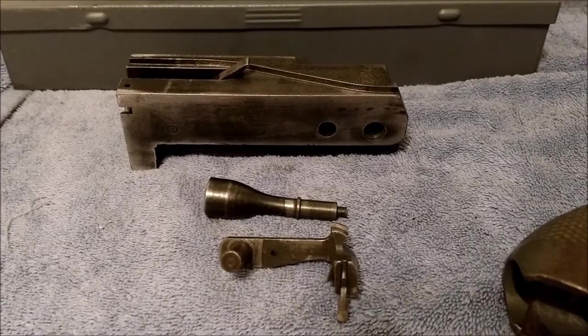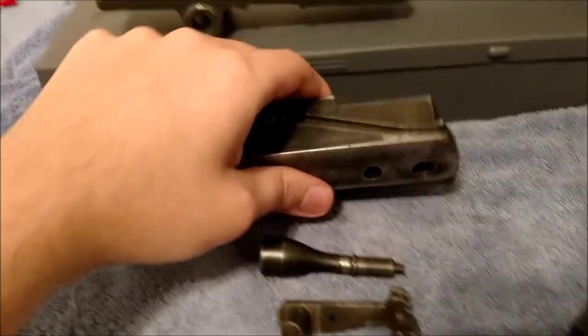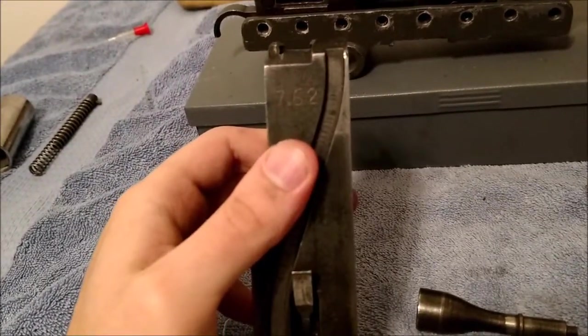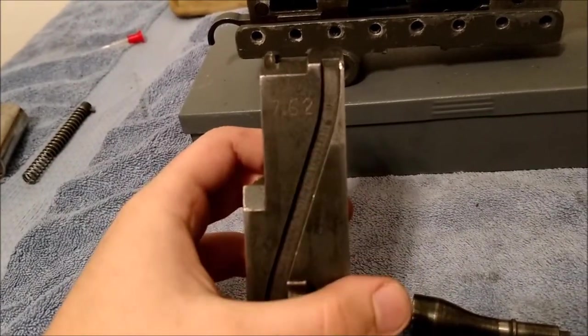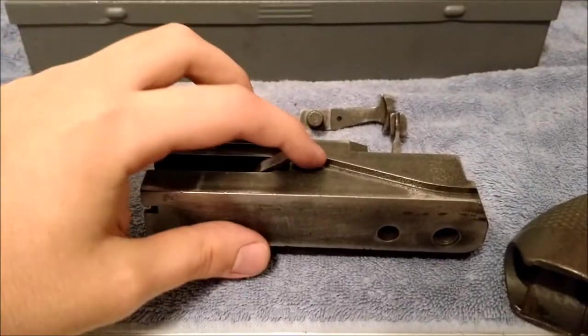So here's the bolt, the bolt handle, and the extractor. The bolt is a huge chunk of steel. You can see 762 is marked on it because this is a 308 bolt by the Israelis.